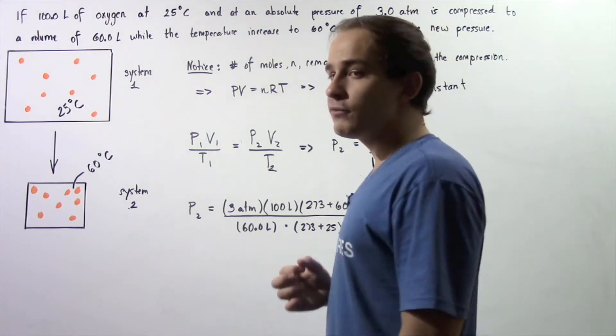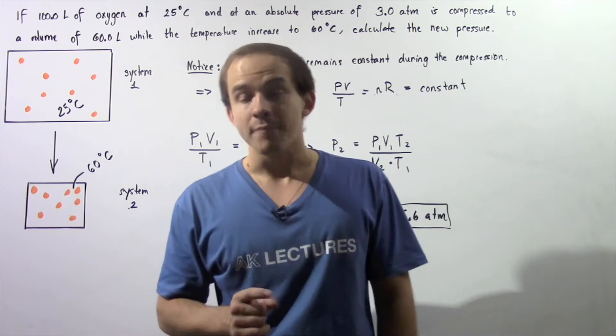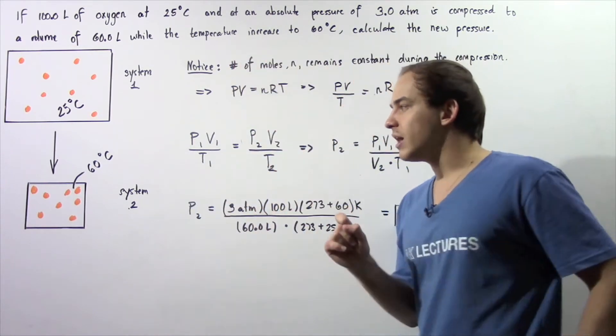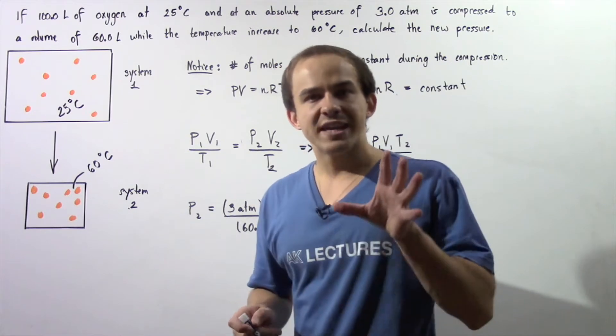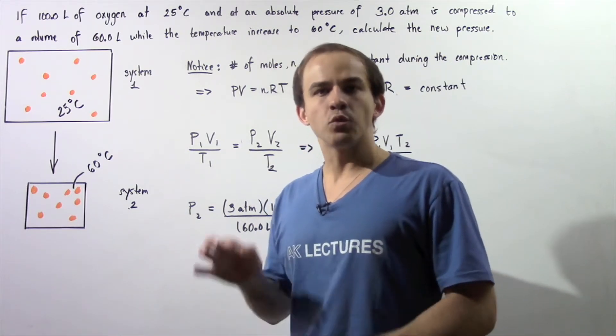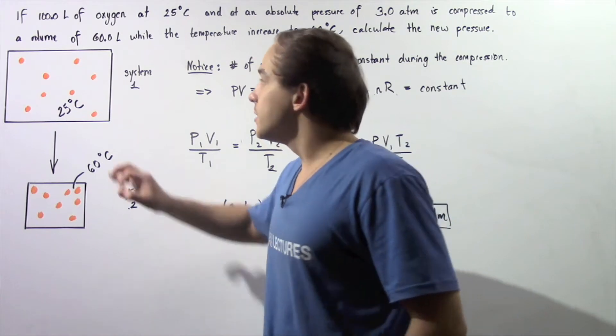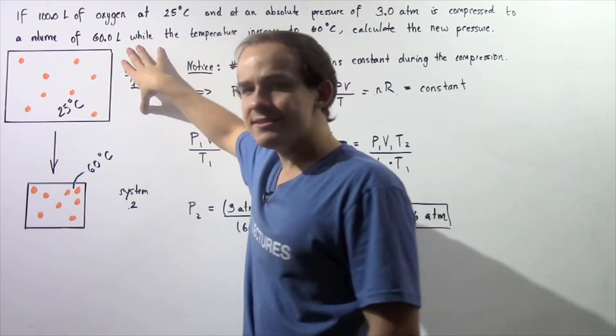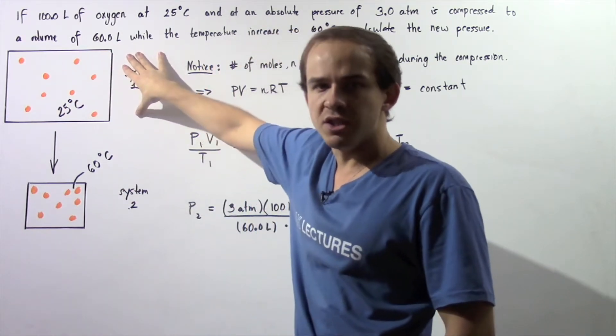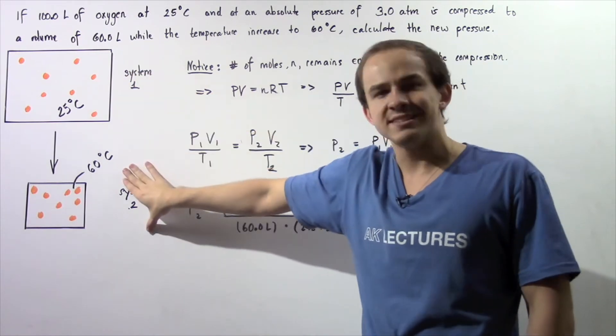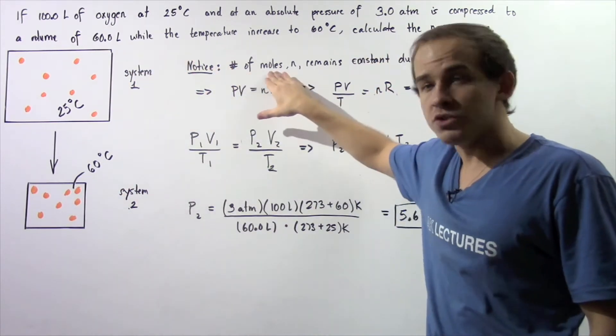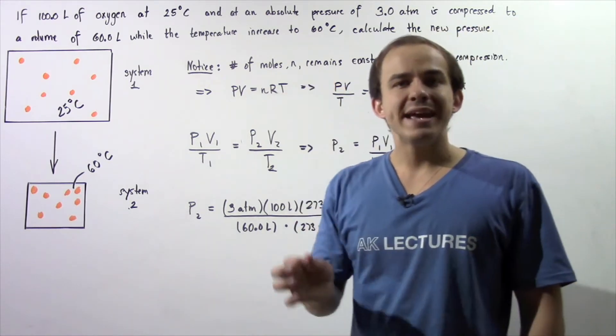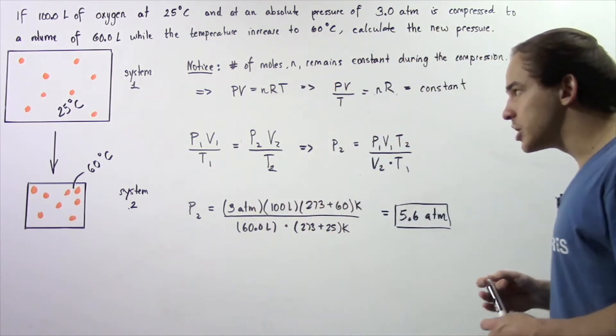To calculate the value we have to apply the ideal gas law. But first we have to realize the following important point: the number of gas molecules inside our system remains constant. The number of gas molecules in system number one is equal to the number of gas molecules in system number two. And that means the number of moles given by N remains constant during our compression.